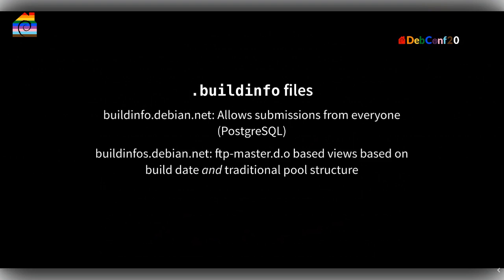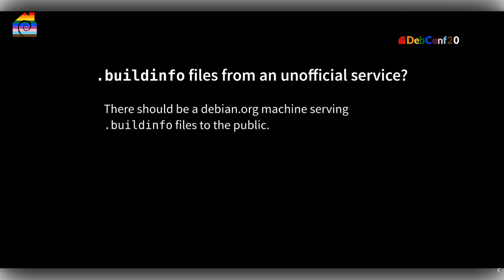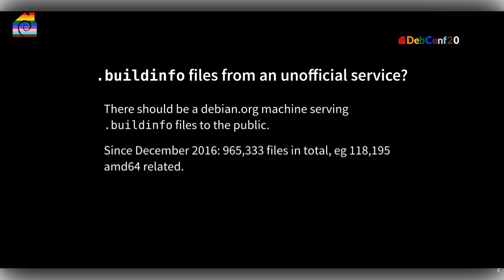So I set up buildinfo.debian.org which just copies the build info files from FTP master, where they are stored in a date-based structure — 2020, 08 for August, 27 for today — and then all the build info files for that day. So if you look for a build info file, you need to know when the package was built, which is a bit cumbersome. There's also a traditional pool structure. But this is an unofficial service; in my opinion there should be a Debian machine serving these build info files. As of 2019 there were almost a million files — probably over a million now — about 12 gigabytes of files, 4 gigabytes of symlinks. The number of files is the issue, not the data size.